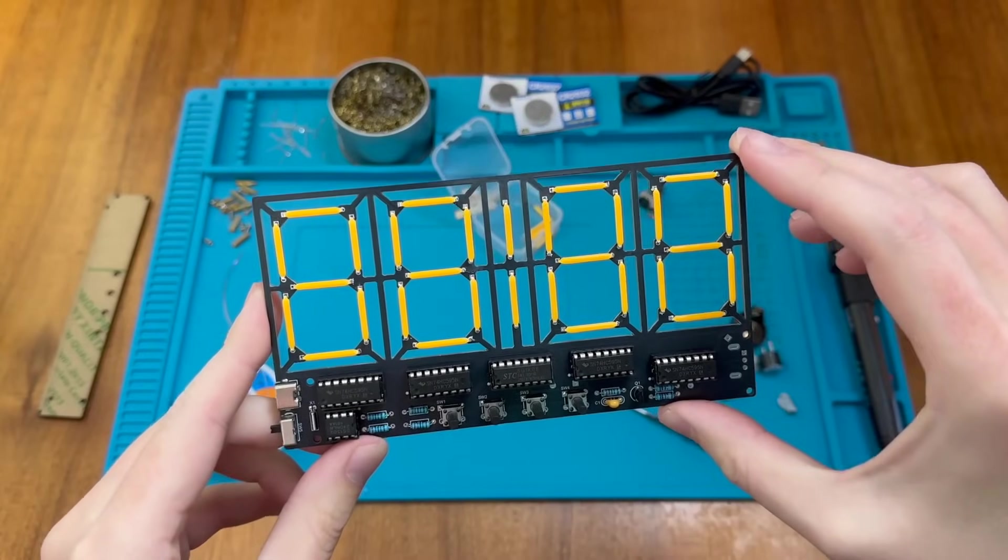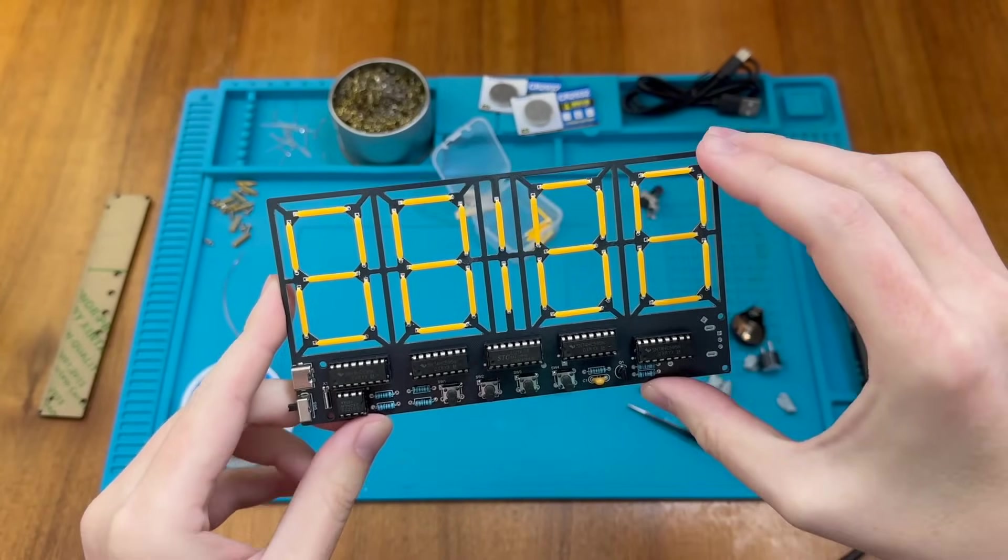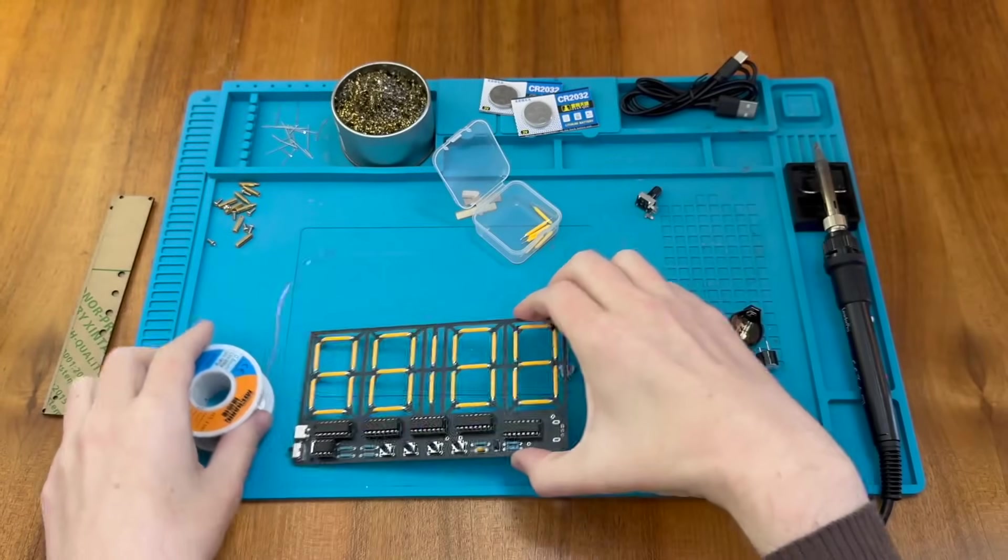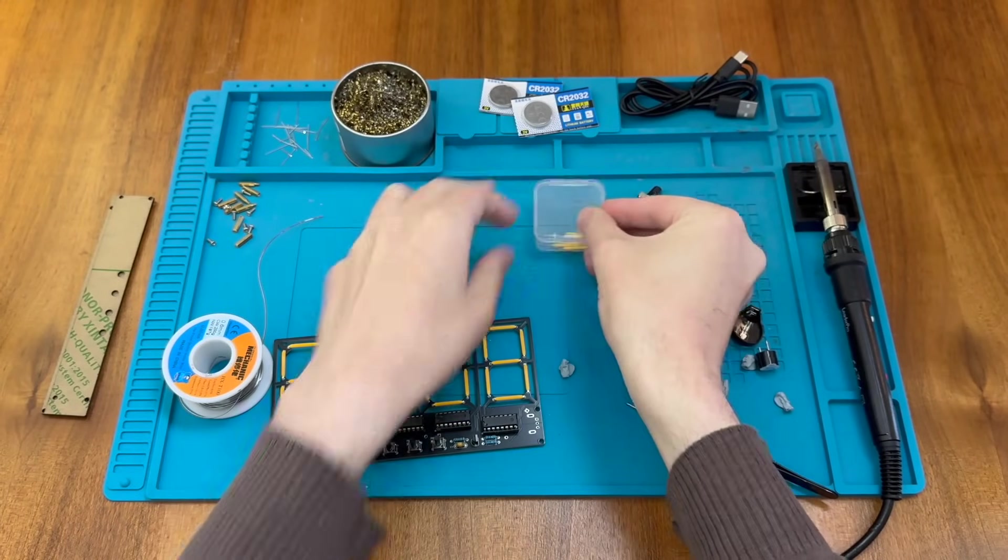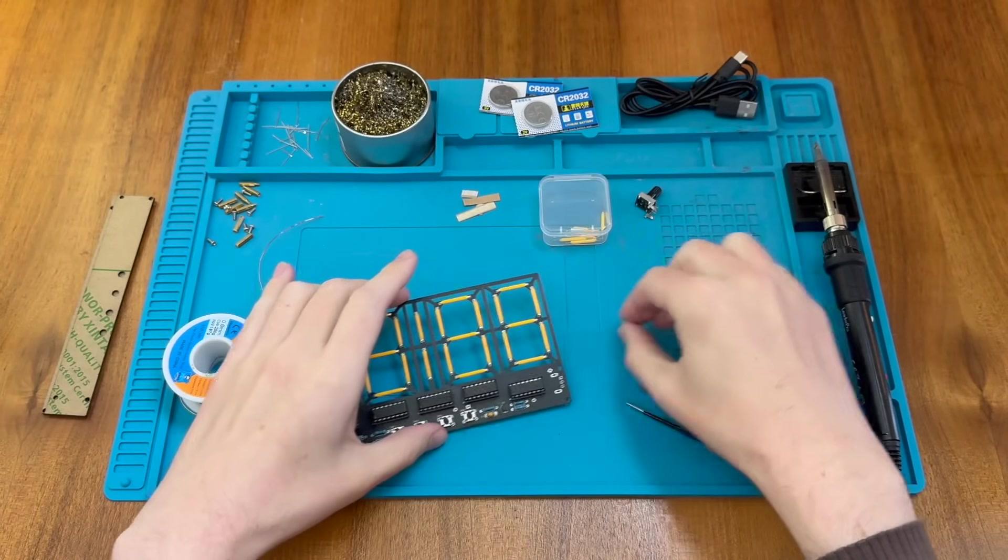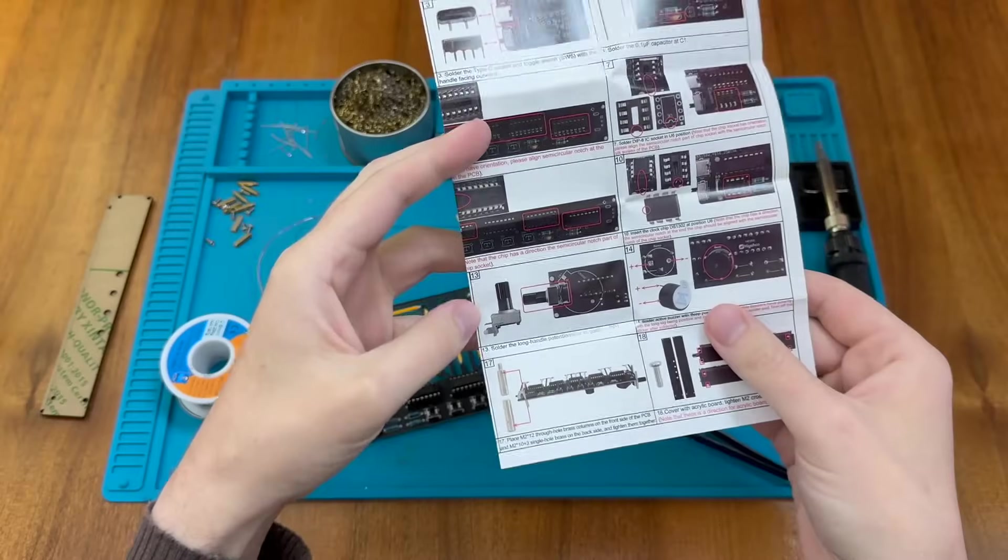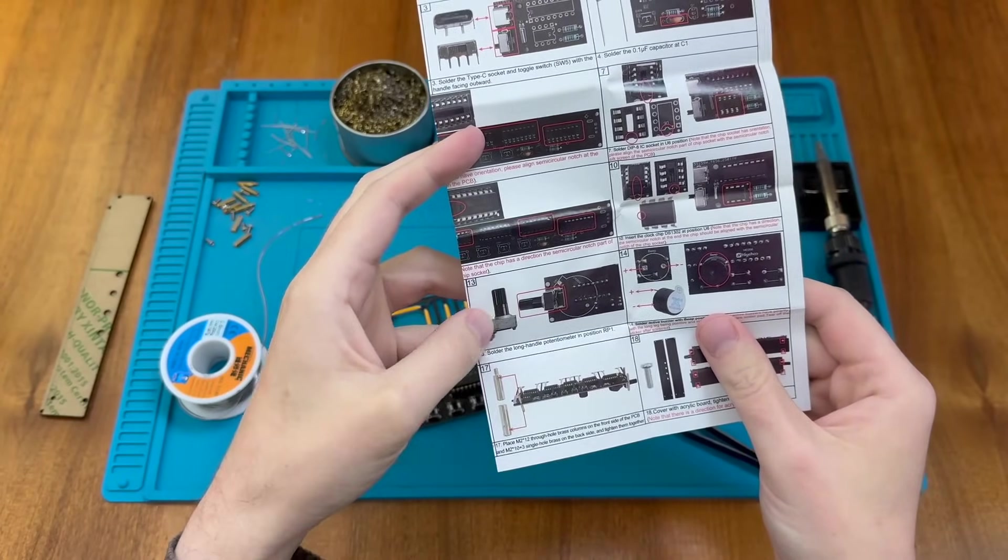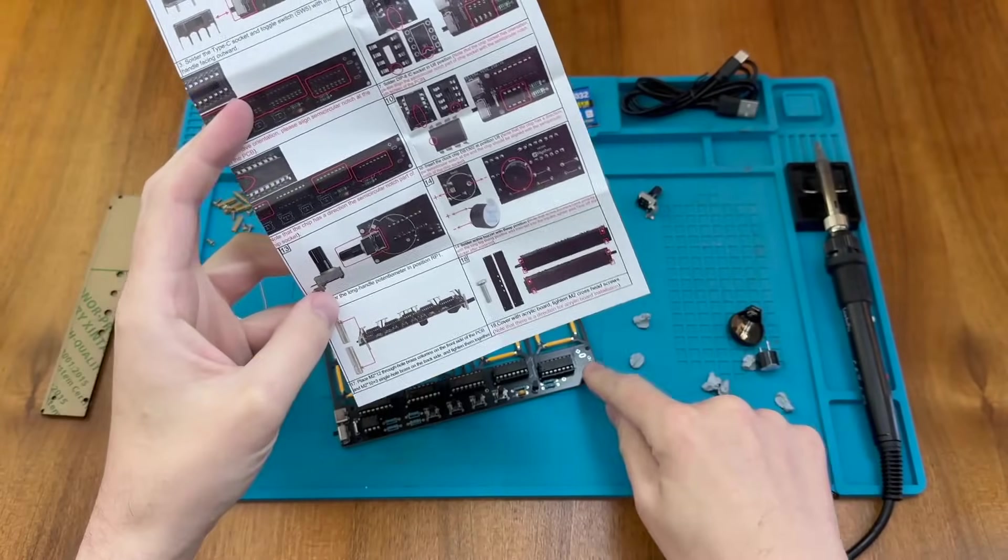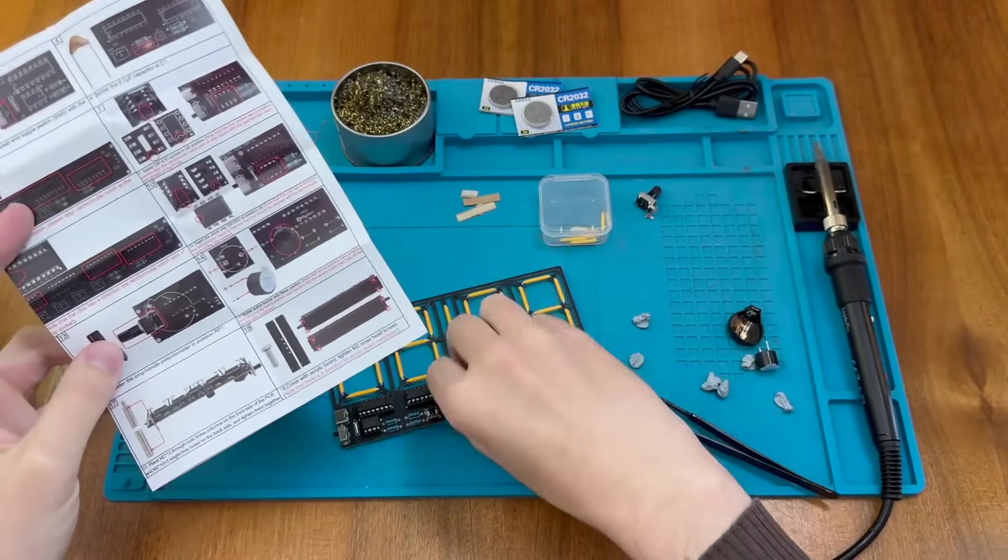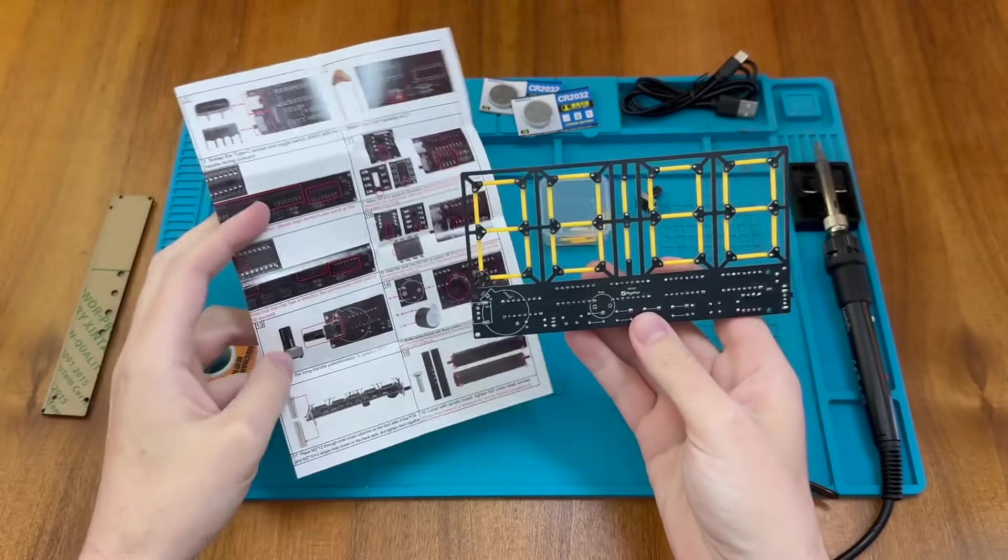Okay so that took quite some time but we've now completed putting in all of the LEDs and it seems we have a few spare LEDs and they might come in handy if it turns out that we've put any of these in backwards or they don't work for some other reason. Next up we are at step 13 which is to pop in the long handle potentiometer and that's our brightness control in RP1 which is over here. And it looks like that's supposed to go on the back of the board.